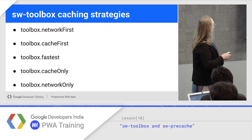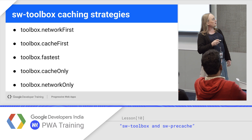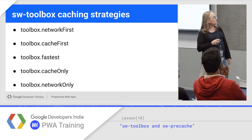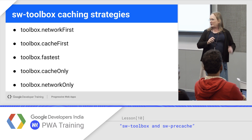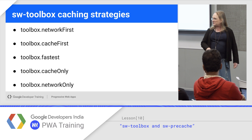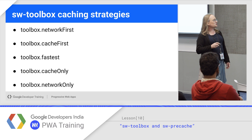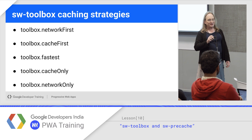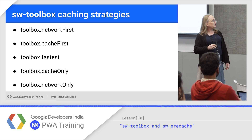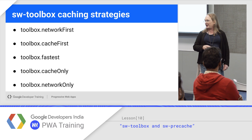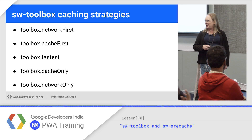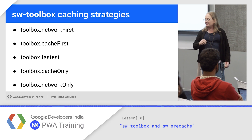There are five strategies you can use: Network, Cache First, Fastest — which is a race, so race them and whatever comes back first wins — Cache Only, or Network Only. And you can add your own strategies. If you look at the source code for these, they're like 30 or 40 lines each, so it's really easy to write a new one.